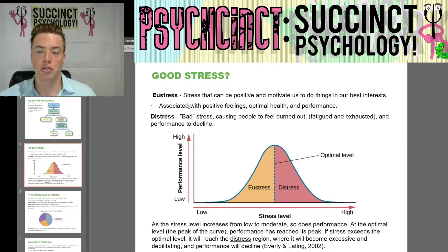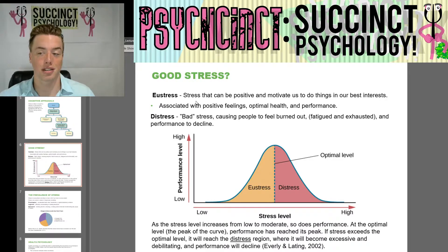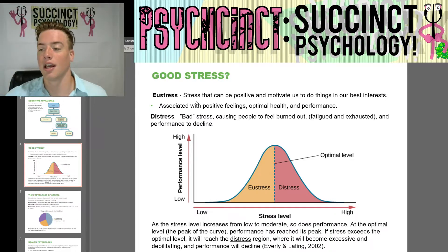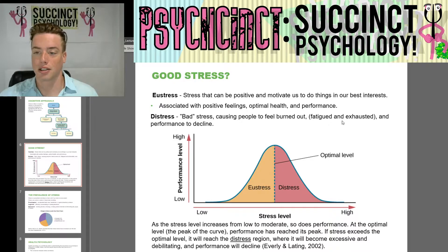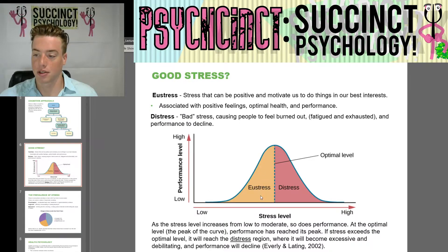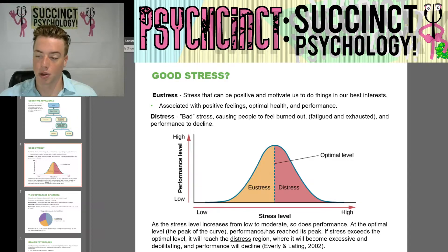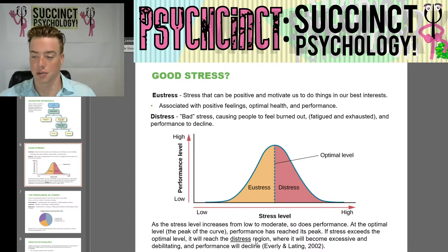What is good stress? Eustress is stress that can be positive and motivate us to do things in our best interest, associated with positive feelings, optimal health, and performance. Distress is bad stress, causing people to feel burned out — fatigued and exhausted — and performance to decline. On the chart, as the stress level increases from low to moderate, so does performance. At the optimal level — the peak of the curve — performance has reached its peak. If stress exceeds the optimal level, it will reach the distress region, where it becomes excessive and debilitating and performance will decline.